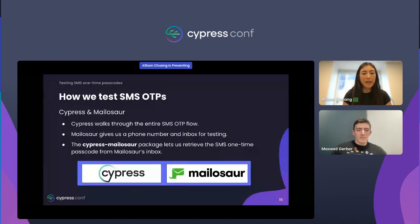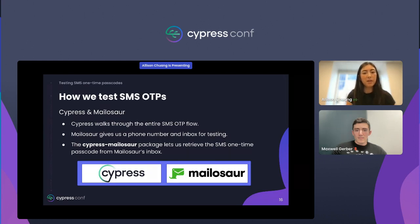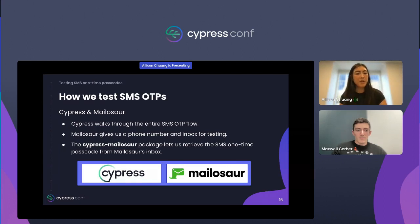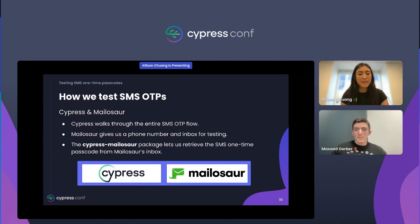We use Cypress and Mailasaur to test SMS OTPs. Cypress lets us walk through the flows and Mailasaur provides us with a testing phone number and inbox. We can use Mailasaur's custom Cypress commands to easily access the passcode from Mailasaur's inbox.